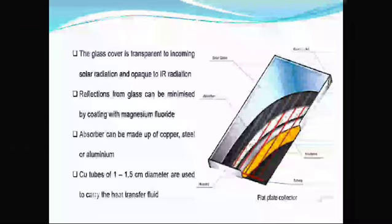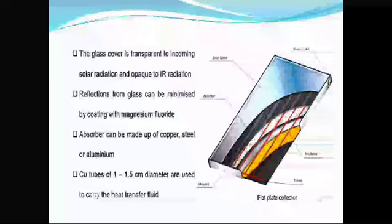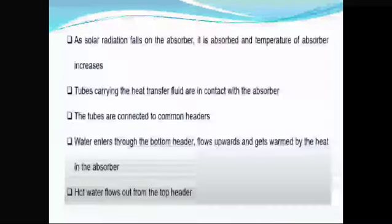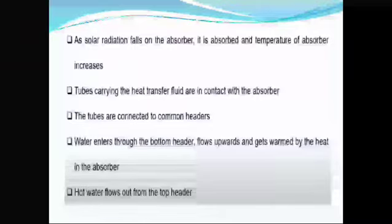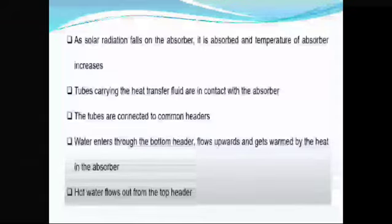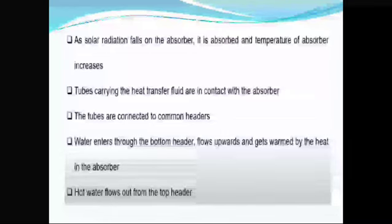The absorber can be made up of copper, steel or aluminium. Solar radiation falls on the absorber, is absorbed, and the temperature of the absorber increases. Tubes carrying the heat transfer fluid are in contact with the absorber and are connected to common headers. Water enters through the bottom header, flows upward and gets warmed by the heat in the absorber. Hot water flows out from the top header.